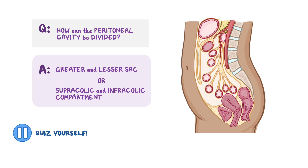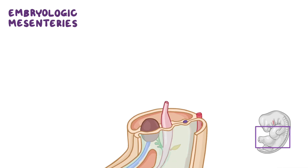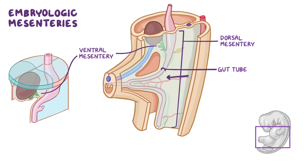Now let's switch gears and explore the development to understand how these structures came to be. The gastrointestinal tract begins as a tube known as the gut tube. Initially, it is closely associated with the posterior abdominal wall but begins to move farther away from it. The gut tube is then suspended from the dorsal wall of the embryo by connective tissue known as the dorsal mesentery and from the ventral wall by the ventral mesentery. The ventral mesentery is derived from a plate of mesoderm known as the septum transversum and extends from the ventral aspect of the proximal part of the duodenum to the developing liver. The dorsal mesentery extends from the lower portion of the esophagus to the rectum, attaching it to the posterior body wall and creating a pathway for blood vessels, nerves, and lymphatics.